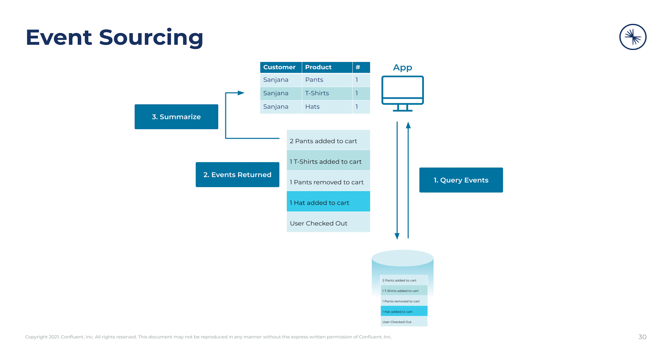One problem with this approach occurs when the number of events gets very large. Lots of events will make the reduce operation take a long time to execute and use more clock cycles in the process than you might be comfortable with. This probably isn't an issue for a shopping cart, but other use cases that incorporate a large number of events — for example, displaying the balance of a checking account — that's a chronological reduce over your entire payment history. That can take a while to compute, not great if you're clicking buttons and expecting things to happen then and there.